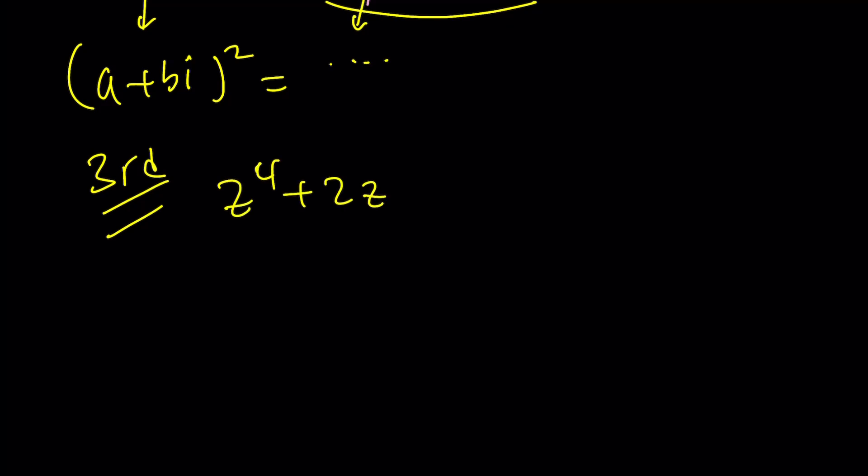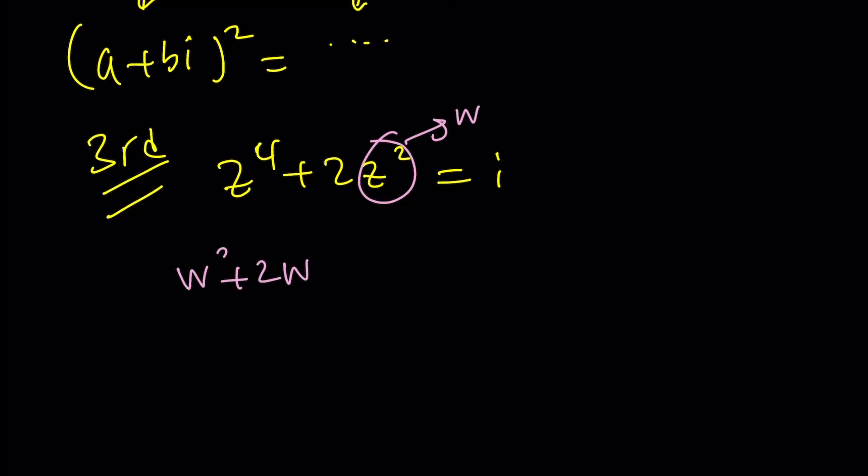I thought it was going to be nicer. The third method is substitution. Let's just call this W. And then we get z squared plus 2W. W squared, sorry. Because this is Z to the fourth. Here we go. And then I'll do the same trick.